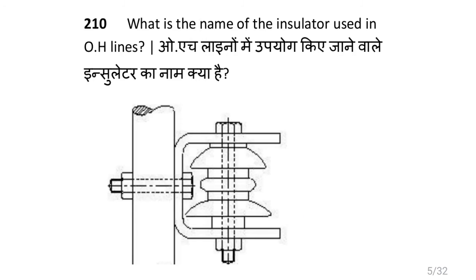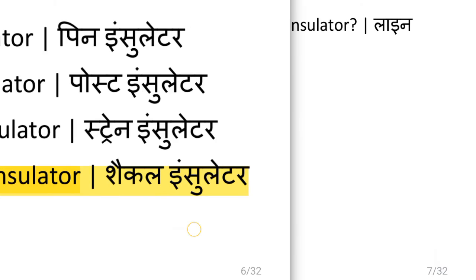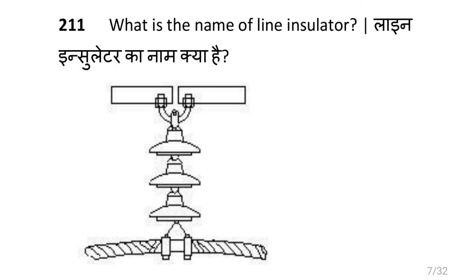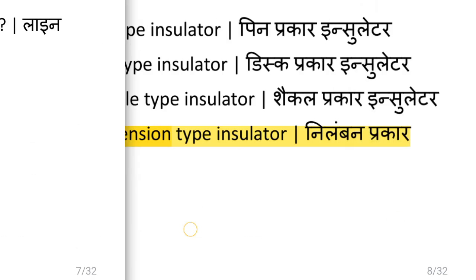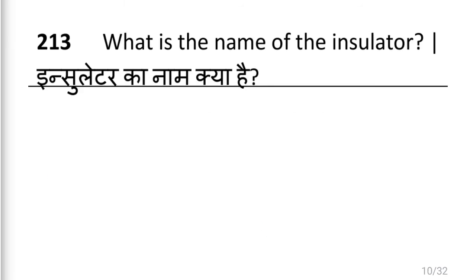What is the name of insulator used in overhead lines? That is shackle insulator. What is the name of line insulator? That is suspension type insulator. Which is the permissible load for lighting sub-circuit in domestic wiring as per IE rule? That is 800 watt.